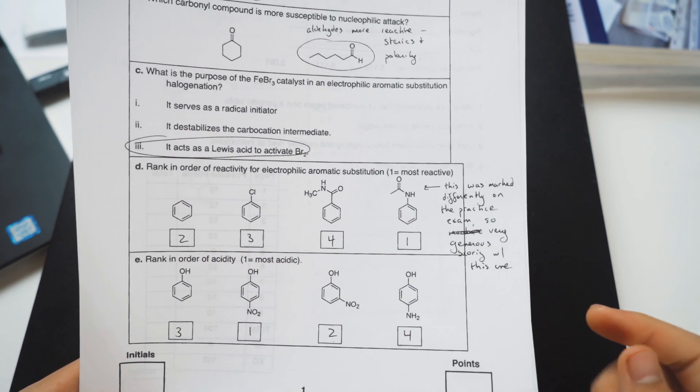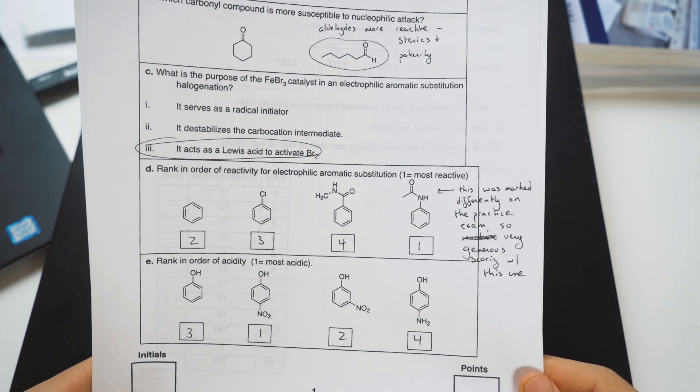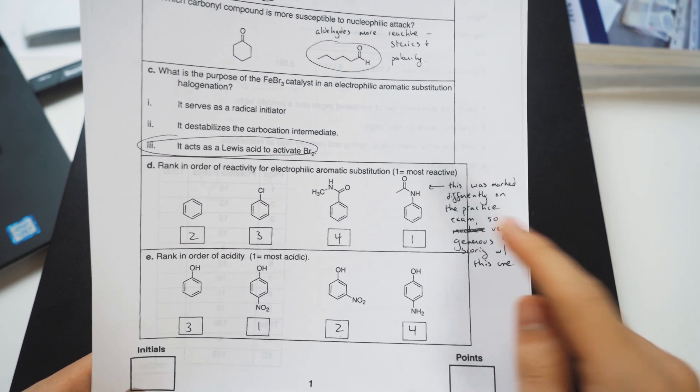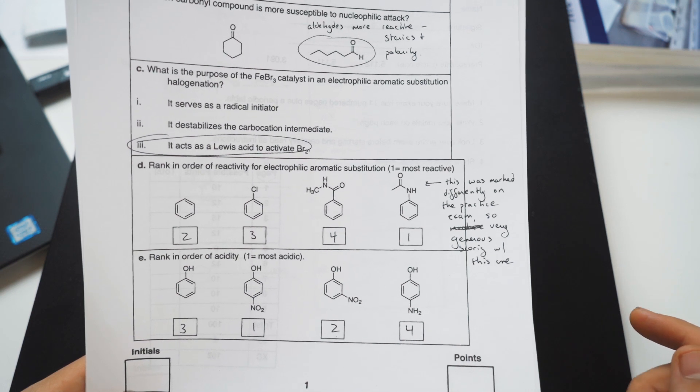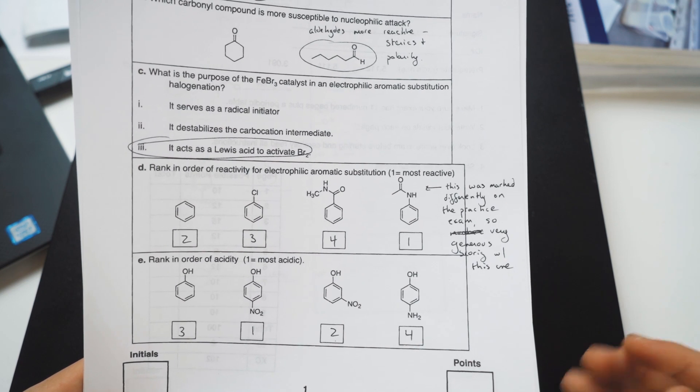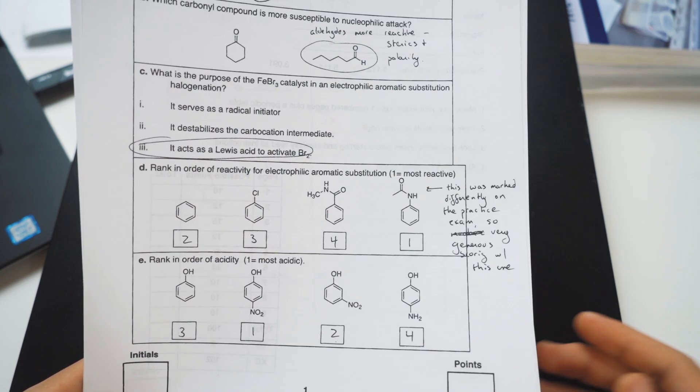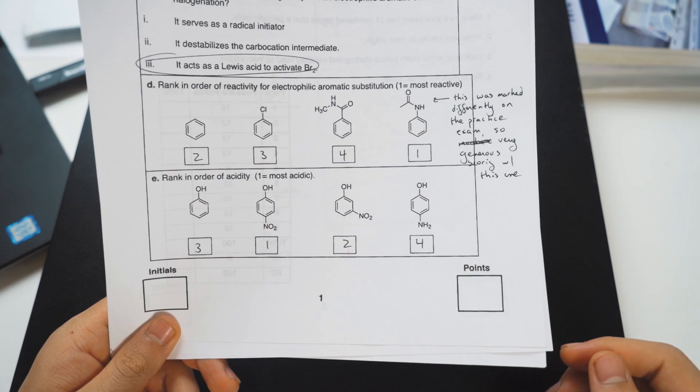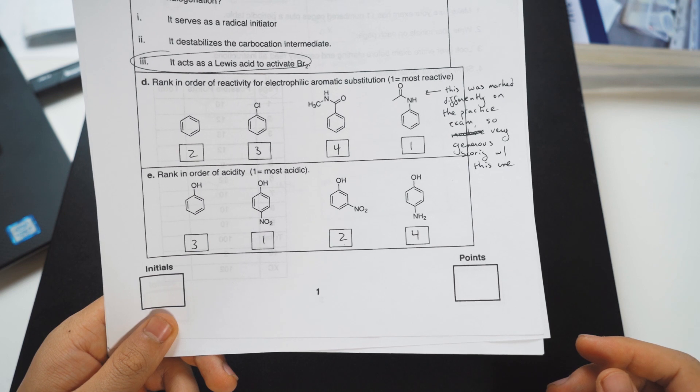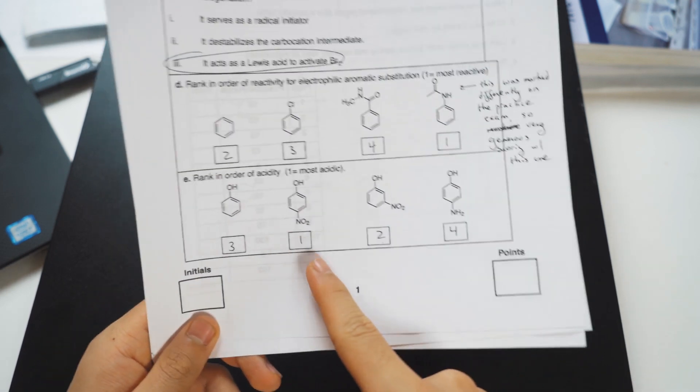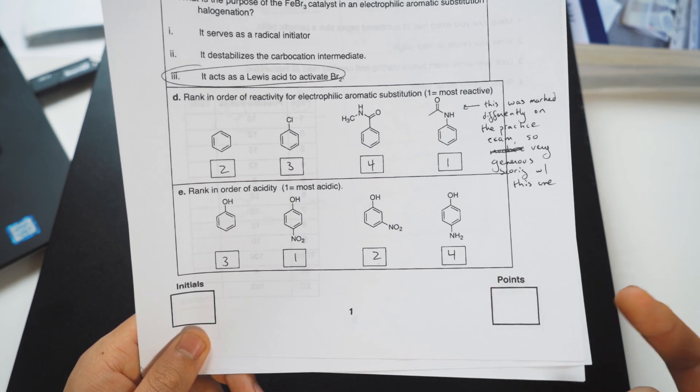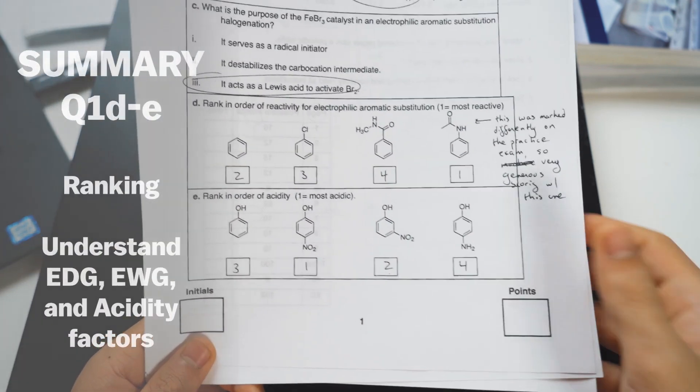Now here you have a ranking problem. Ranking problems are really common - they were really common when I took Orgo 1 and Orgo 2. Understanding electron withdrawing and electron donating groups - the more reactive ones are going to have the activating electron donating groups and the less reactive ones are going to have the deactivating electron withdrawing groups. Here we have ranking acidity, going off the entire electron withdrawing, electron donating type of thing. But also beyond that, between 1 and 2, even though they're both electron withdrawing, you have to probably draw out the resonance structures for this. But not the hardest problem in the world.